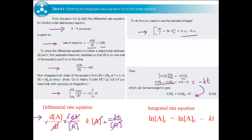This equation is usually rearranged to the form shown here, which is the integrated rate equation for a first-order reaction. If you know the concentration of A at the start of the reaction and have a value for the rate constant k, it allows you to work out the concentration of A at any time t. More importantly, a plot of log of the concentration of A at time t against time is a straight line with a gradient of minus k.